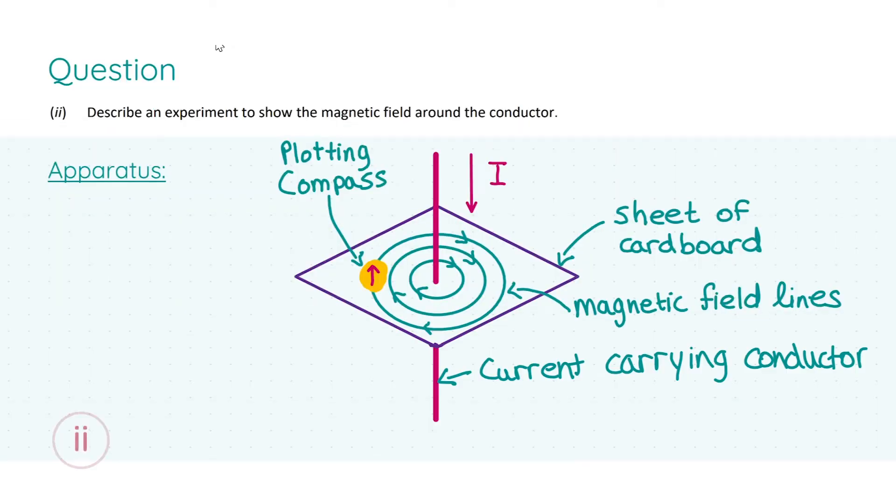In part two we're asked to describe an experiment to show the magnetic field around the conductor. Remember, we were told that this conductor is a current carrying conductor, i.e. a wire. Whenever you hear that, just think of a wire. Now moving on to the actual experiment, the apparatus gets you three marks. The apparatus is as follows: I have a sheet of cardboard here and a current carrying wire just going through it, and I have my plotting compass on the cardboard. The magnetic field lines are being traced out by the compass here. Remember to make sure to label your diagram, but also show the direction of the current as well.